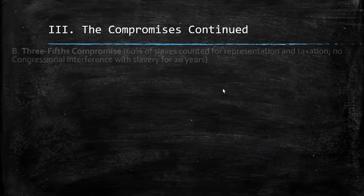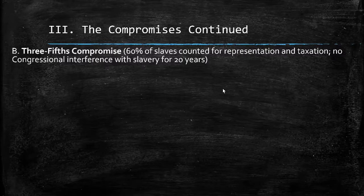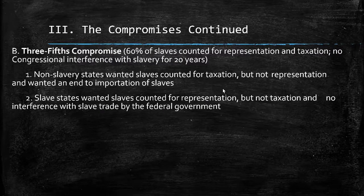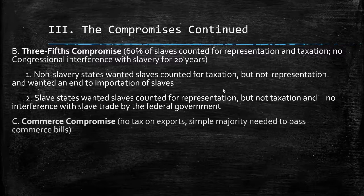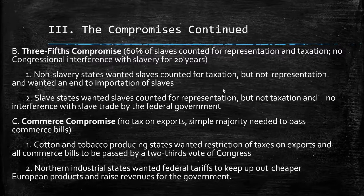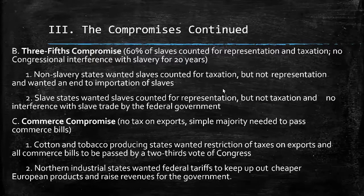There are a few other important compromises. The three-fifths compromise stated that slaves were to be counted at 60% for representation and taxation, and there would be no congressional interference with slavery for 20 years. States with few slaves did not want slaves counted, as that would put them at a disadvantage for representation in the House, while slave states wanted them counted but not taxed. The Commerce Compromise stated there would be no tax on exports, and only a simple majority in the legislature would be needed for commerce bills, making it much easier for commerce bills to pass. Southern cash-crop-dominated states wanted it more difficult to levy tariffs, fearing European retaliation, while northern states wanted to make it easier to tax imports to protect their growing manufacturing economy.